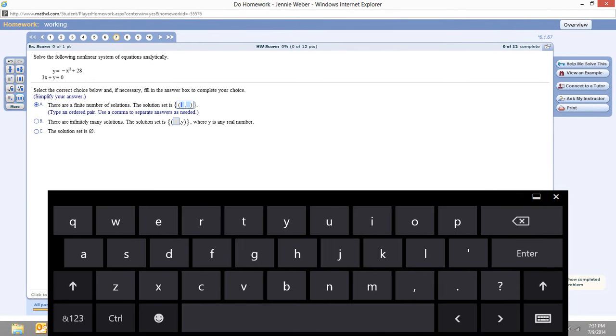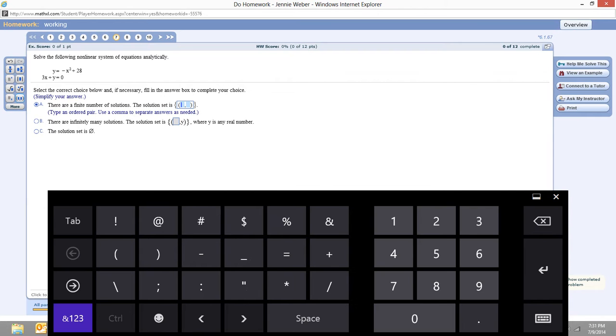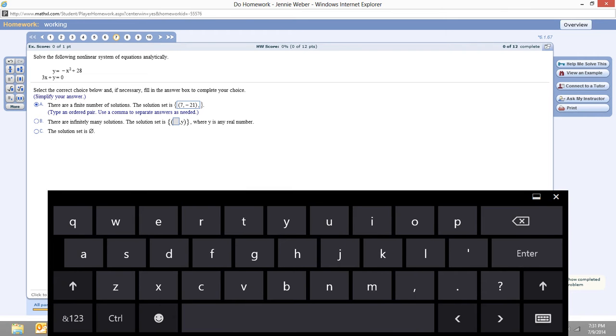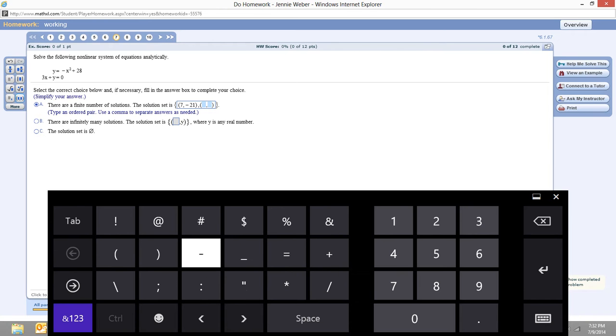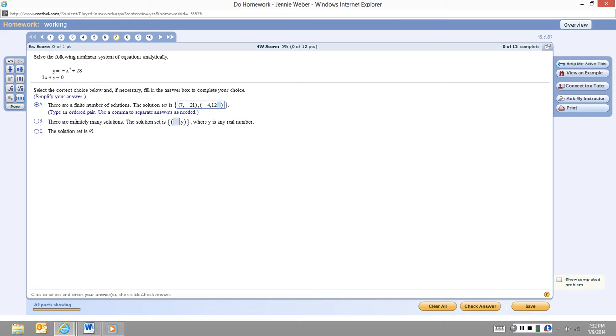And I'm going to put in this. And my first point is 7 and then negative 21. And this says use a comma, so comma. We need another one of these points. Negative 4 and then 12. Check the answer.